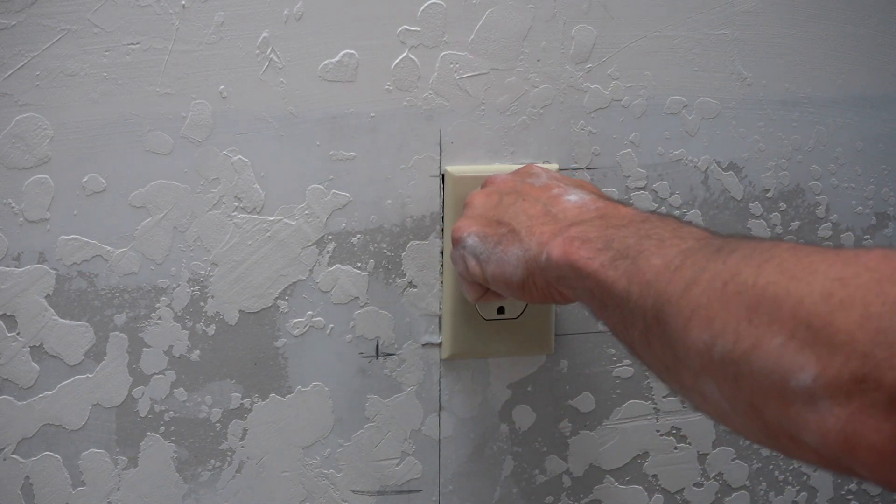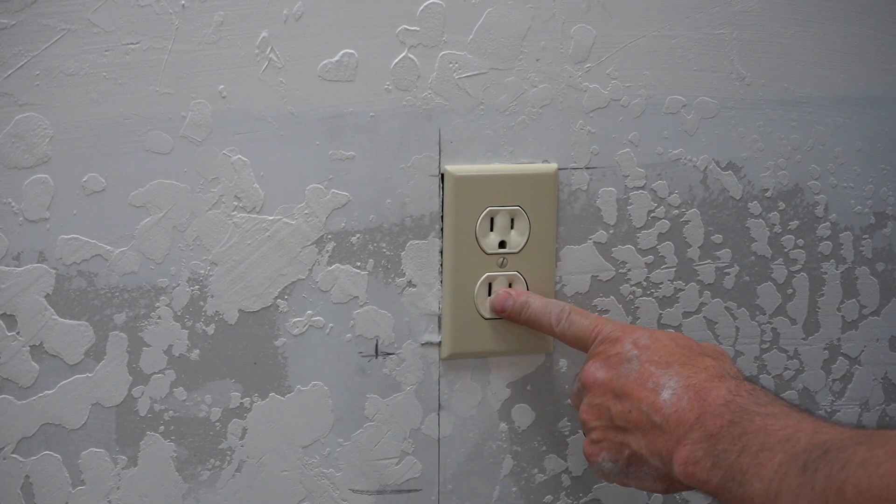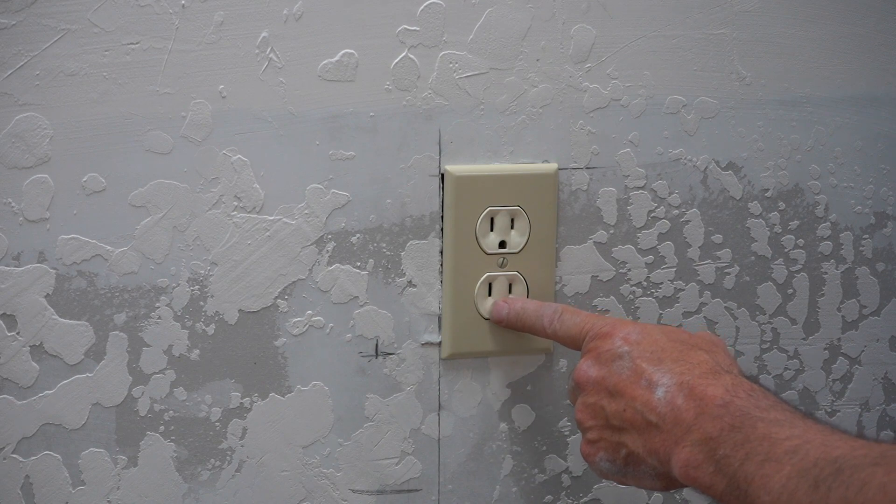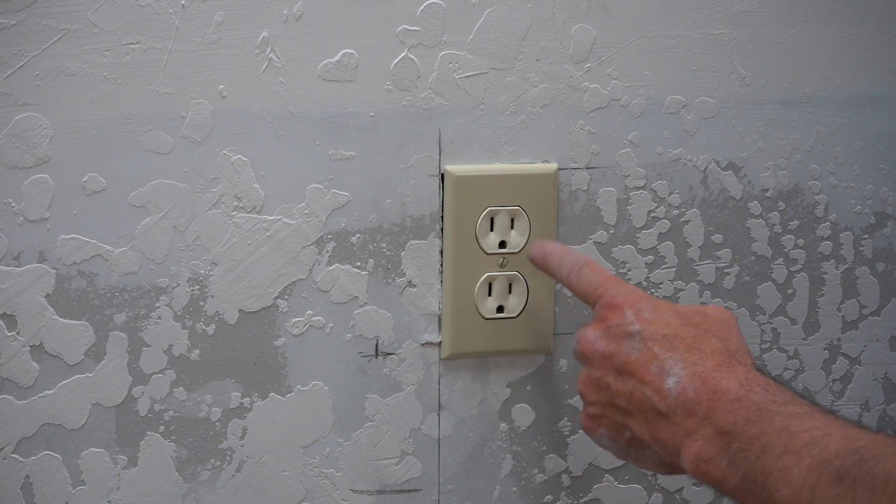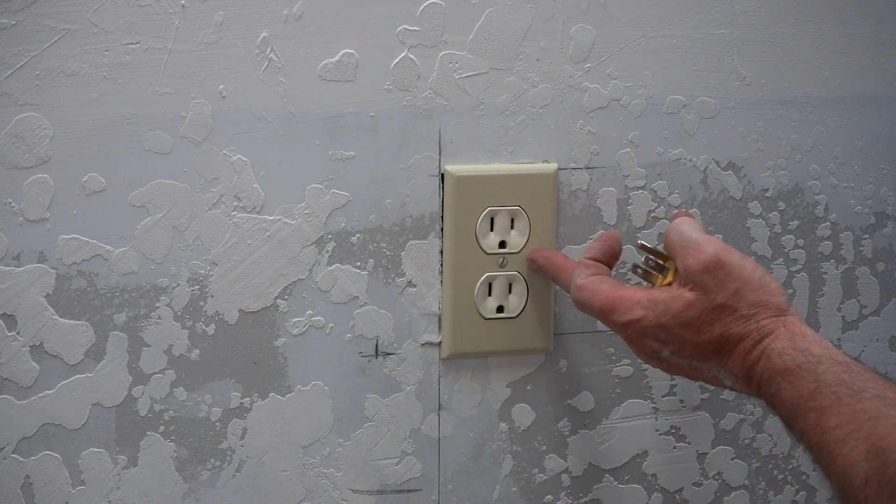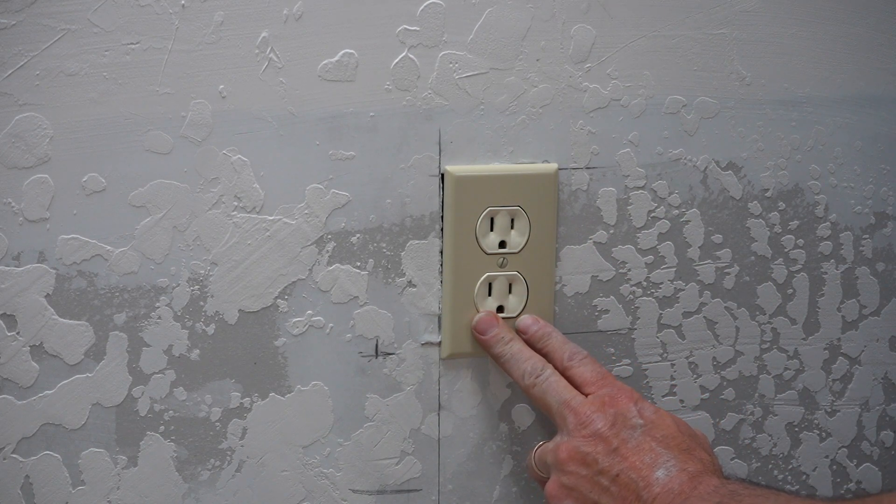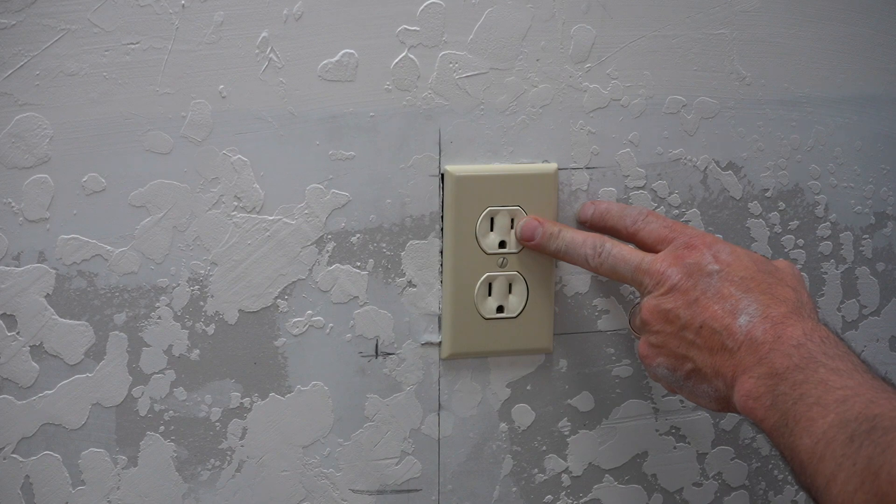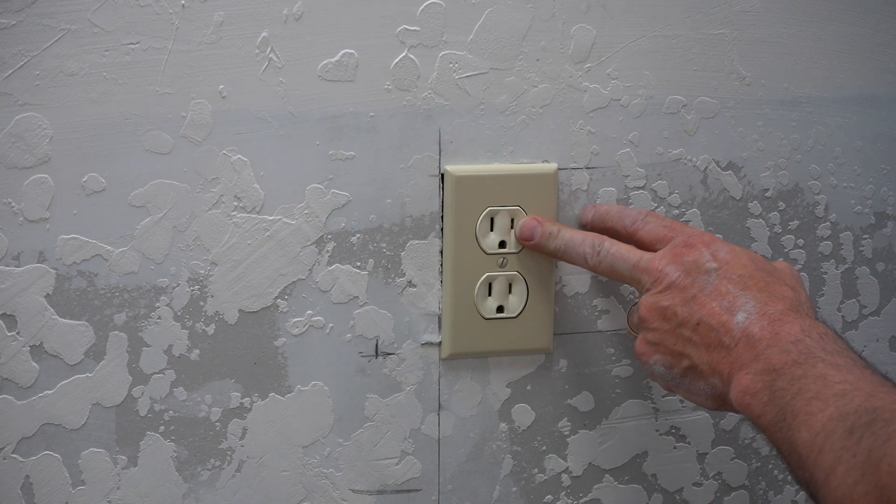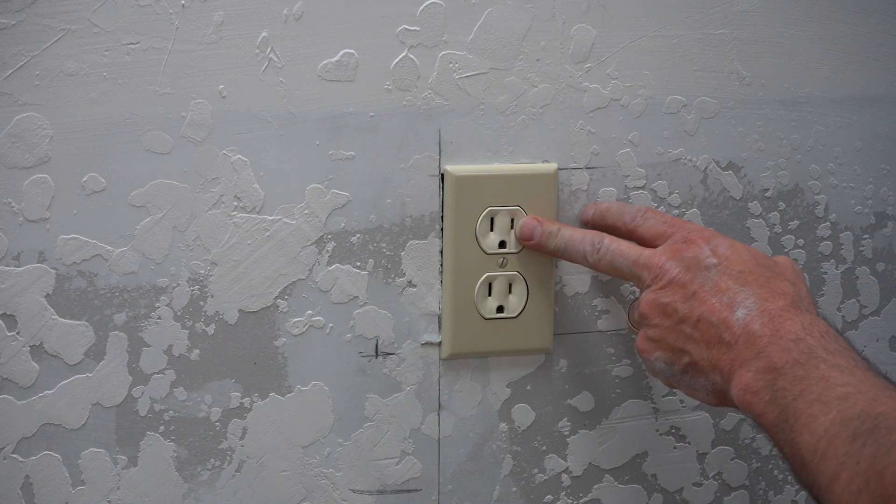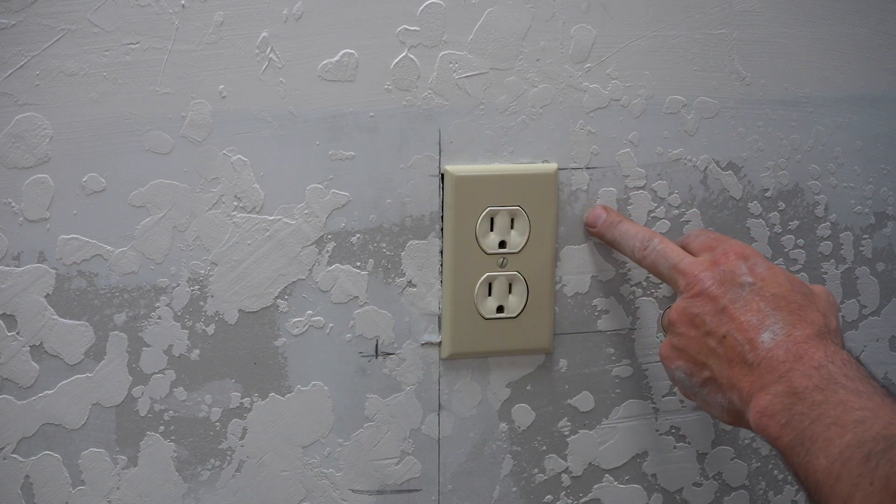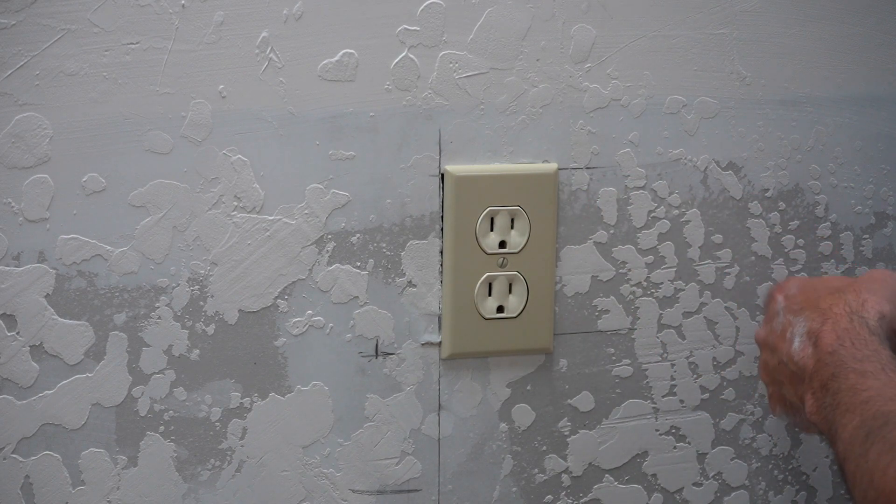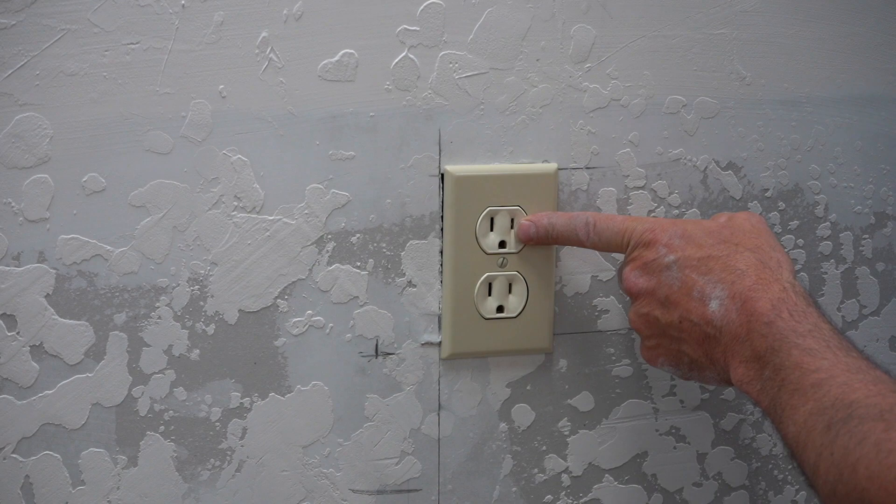Obviously you want to check both, don't just check one, because a lot of homes, especially homes through the 70s and even 80s, they would split these so the bottom would be hot and the top would be running off a switch for a light. Since they didn't have a lot of center lights in the ceilings and bedrooms and living rooms, you'd come in the room, flip a switch, this one would then come on but this one was always hot.